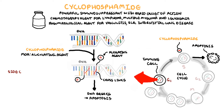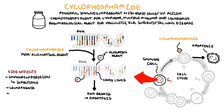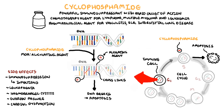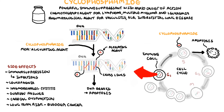Side effects of cyclophosphamide include immunosuppression and leukopenia, which increases the risk of infections, hemorrhagic cystitis, ovarian failure, and cardiac dysfunction, as well as long-term risks of bladder cancer, leukemia, and lymphoma.